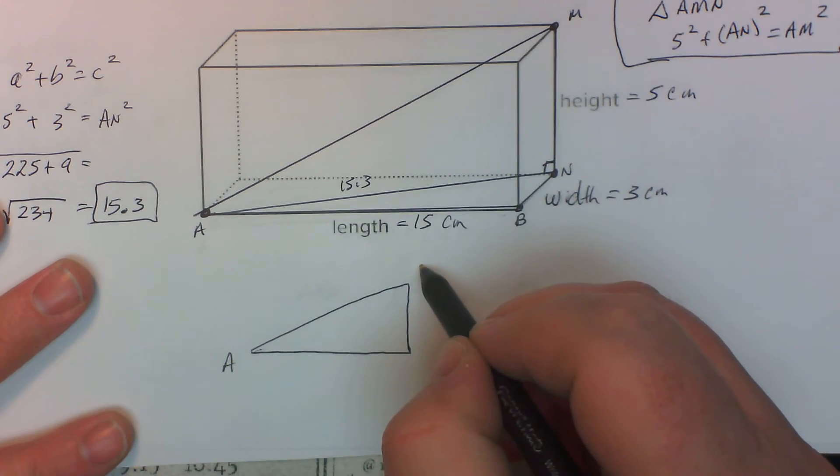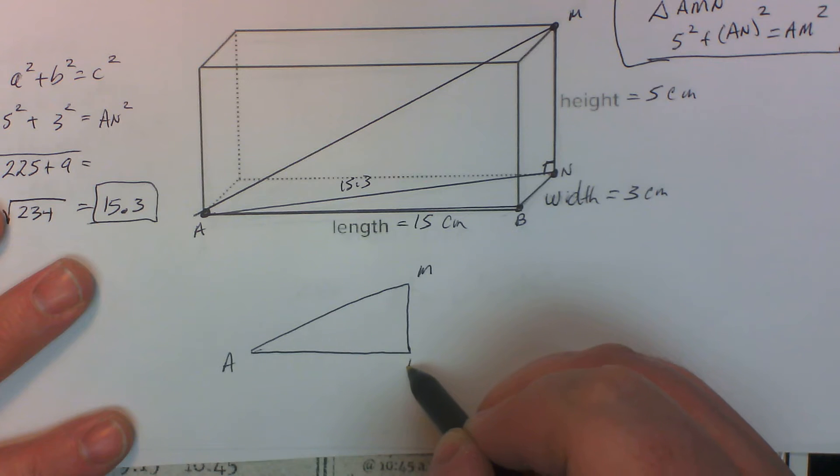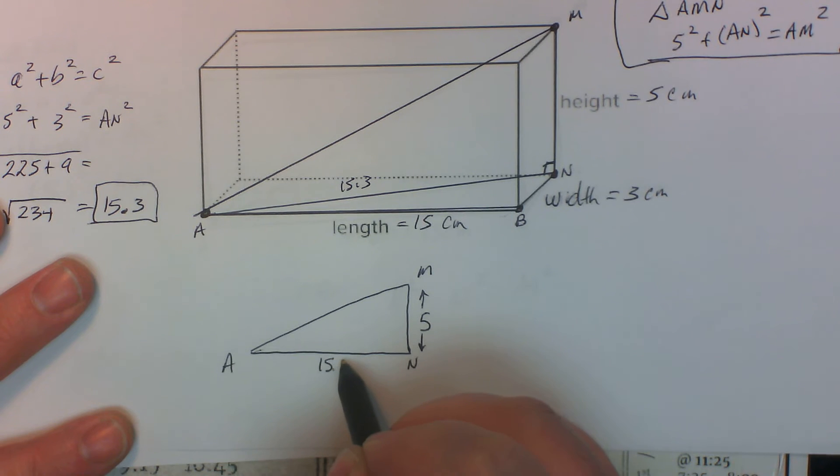So this is A, this is M, this is N. I know this is 5 right here. I know this is 15.3 right here. Do you see? So we had to use the Pythagorean theorem to find that out from the base.